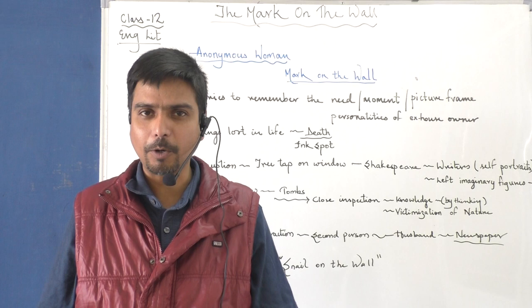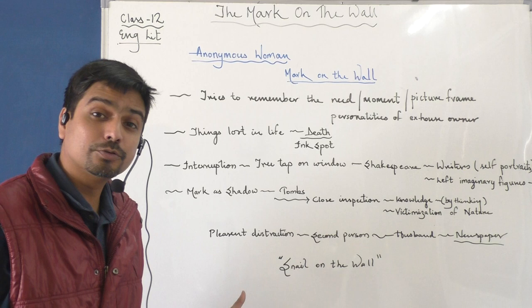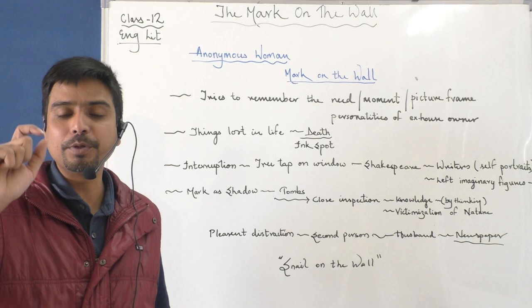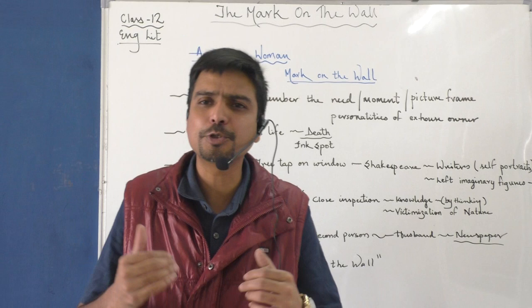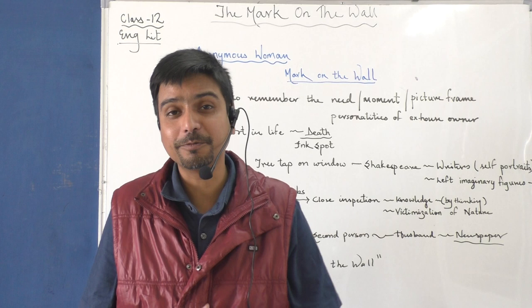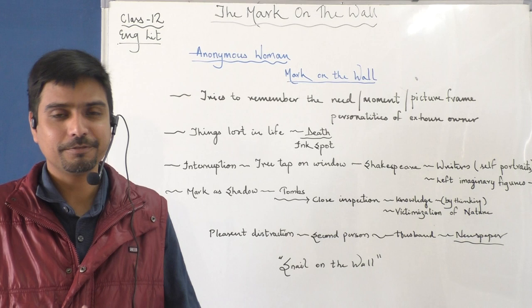Finally, the woman realizes: that spot on the wall — that ink plot, that shadow — was nothing but a snail. A snail on the wall, a crawling insect that gave birth to so many intricate thoughts and reflections. If we look at this chapter in depth, we come to know that even one small life — a tiny creature — can lead a person to imagine beauty in nature, philosophical traits, and so many other things. I hope you got this chapter. If there is any doubt, you can comment below and I'll reply. We are also giving one-on-one classes — if anyone is interested, please let us know. Thank you very much, take care, bye bye.